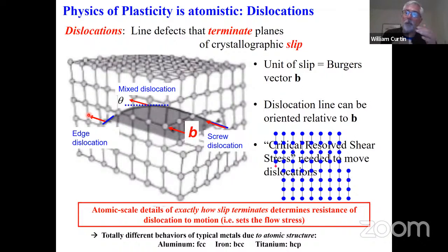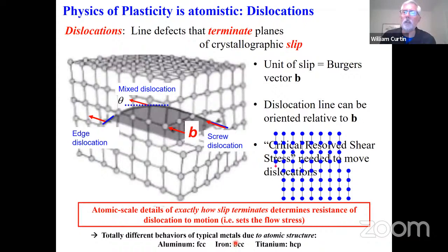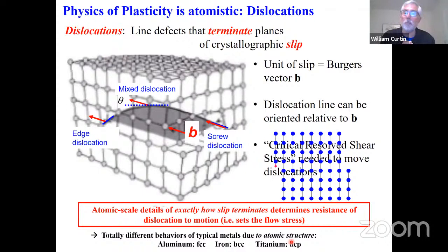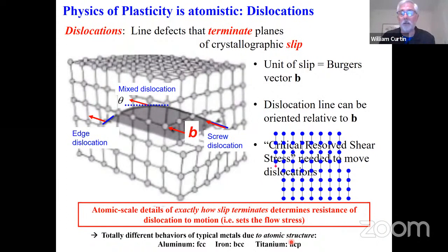The plastic behavior of these materials is totally different because the dislocations are different because the crystal structure is different. In FCC materials, dislocations can glide very easily on 111 planes. In BCC materials, dislocations are very compact in structure and it's very hard to move a screw dislocation. In HCP materials, you have basal planes, prismatic planes, and pyramidal planes—each one with a different slip system competing with one another. At the continuum scale, a dislocation is just described by its Burgers vector and line—the crystal structure information is all lost. So fundamentally, dislocation plasticity comes from the atomic structure.